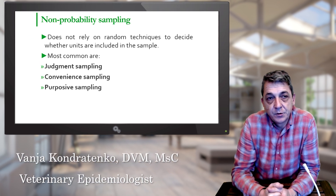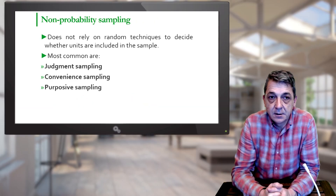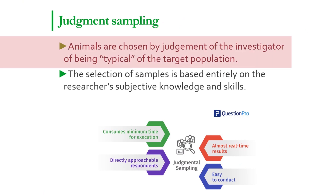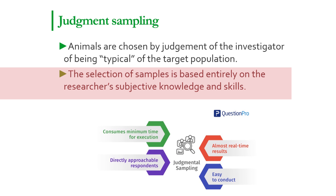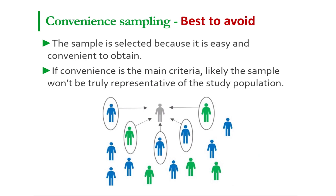Non-probability methods do not rely on random techniques to decide whether or not units are included in the sample. The most common non-probability methods are judgment sampling, convenience sampling, and purposive sampling. In judgment sampling, animals are chosen because the investigator judges them to be typical of the target population — the selection is based entirely on the researcher's knowledge and skills, and is therefore subjective. In convenience sampling, the sample is selected because it is the easiest way to obtain the data. When convenience is the main criterion for selection, we cannot expect the sample to be representative of the study population, which usually leads to biased results.